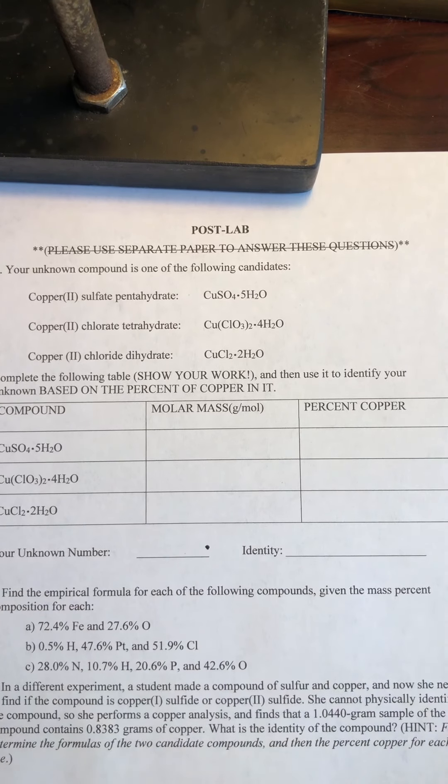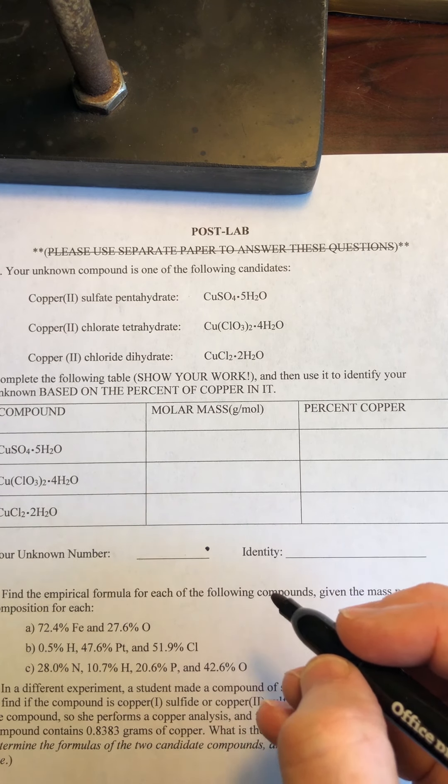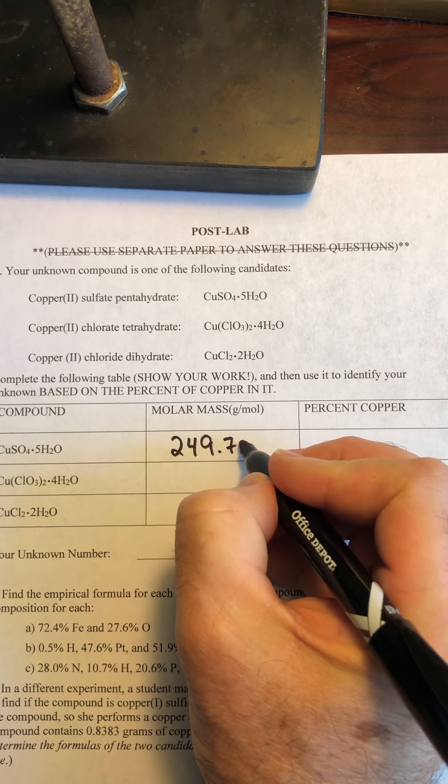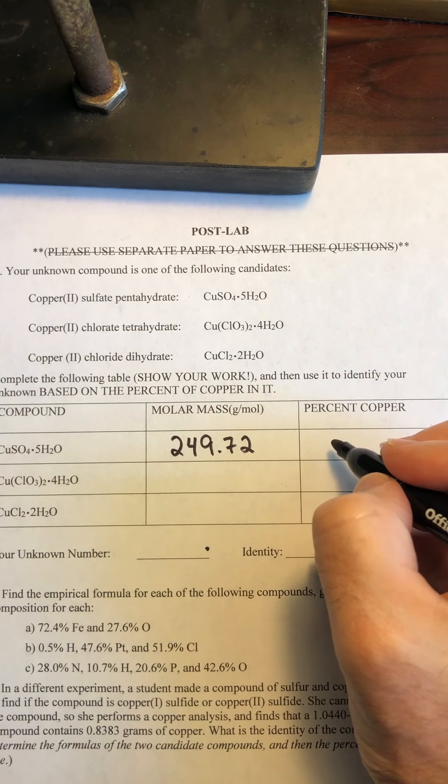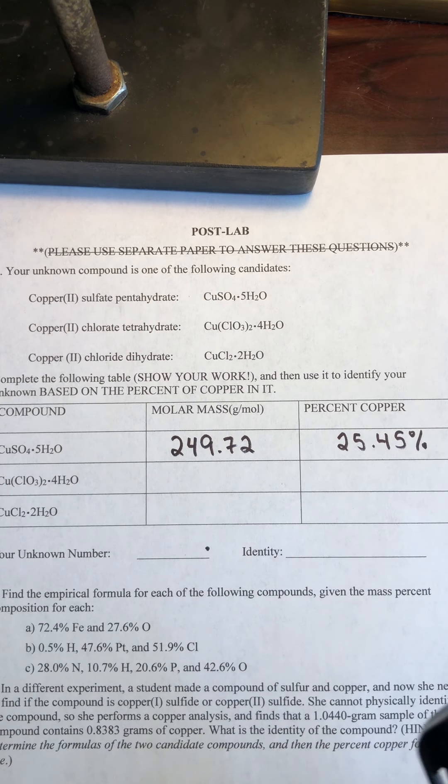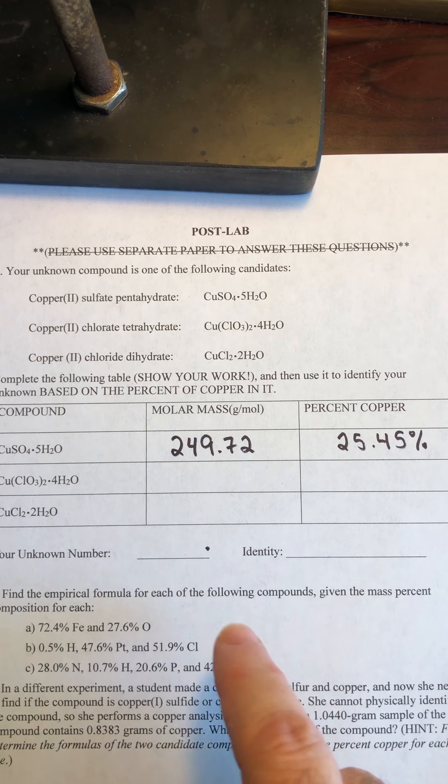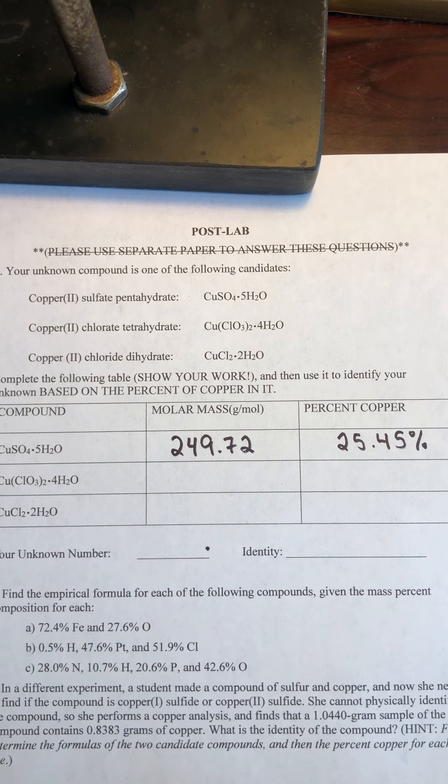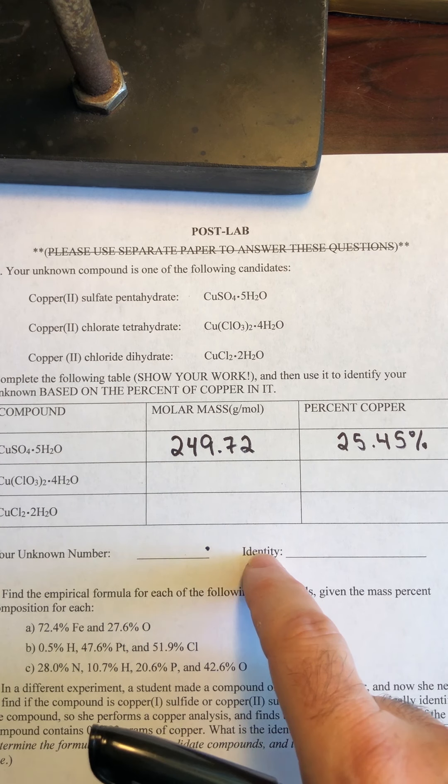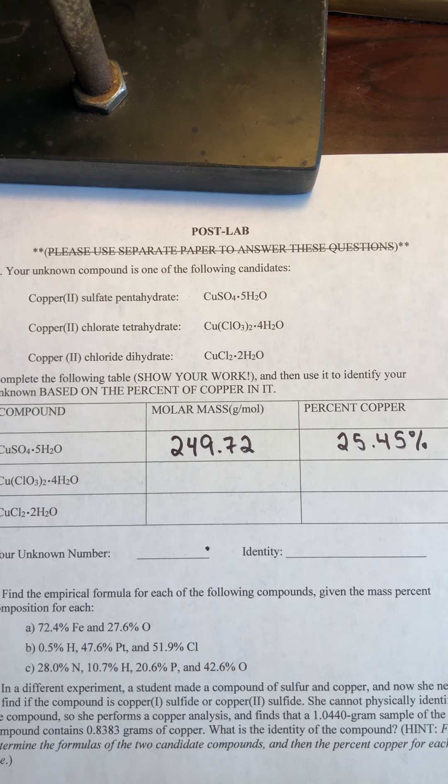And now what you will do is on your post lab page, you're going to fill out this table. We determined that for this first compound here, the molar mass was 249.72. And the percent copper was 25.45%. And now what you will do is you'll have to do the same for both of these guys here. And now based on which unknown you had and what the percent copper was for your unknown, try to see which of these three more closely matches the percent copper that your unknown had.